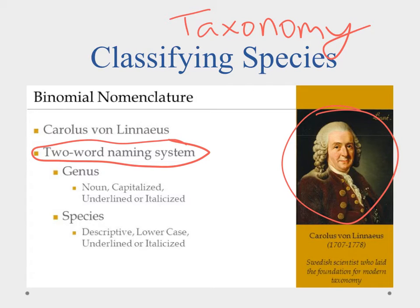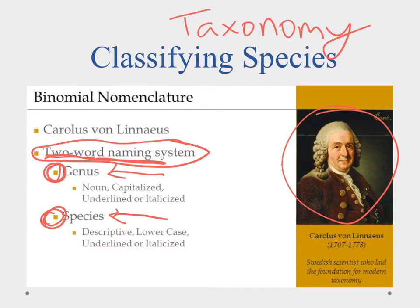Now we say it's binomial, which means it's two names. The first name is going to be the genus and then the second one is going to be the species. Species is what makes an organism distinct. Genus can give us a hint of relationship — what is it closely related to? The genus is generally a noun, it's going to be capitalized, and it's either going to be underlined or italicized. The species name is going to be more descriptive and it's going to be in lower case.